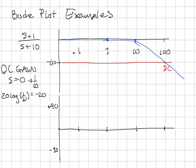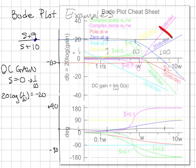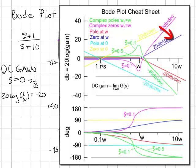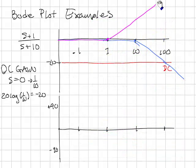Next, we're going to put in the zero. The zero is at 1. It has a break at 1 and then plus 20 dB per decade. So it will do that.